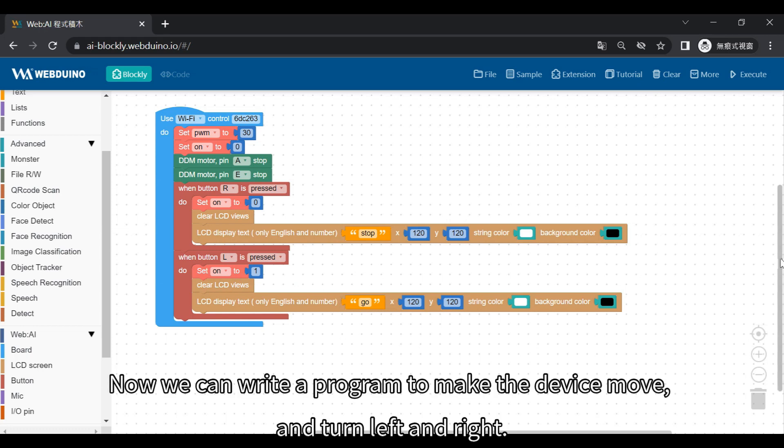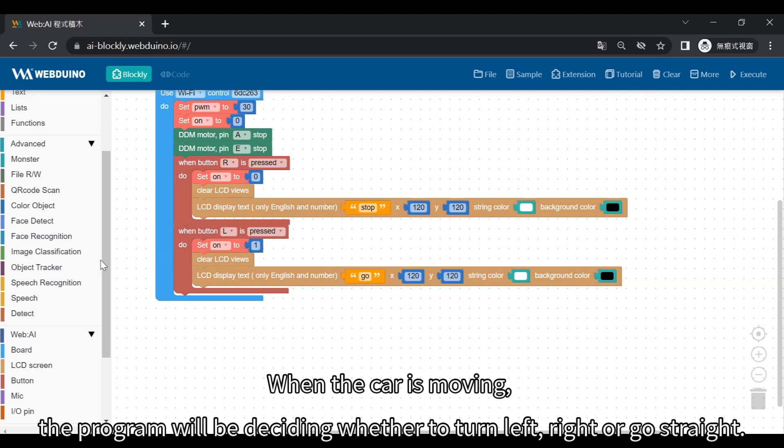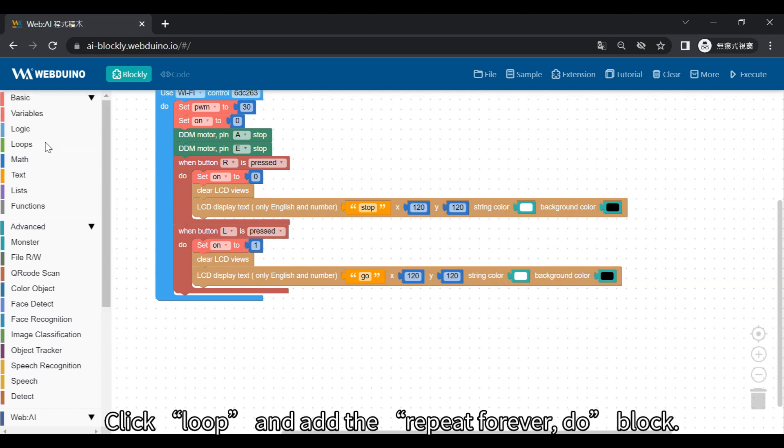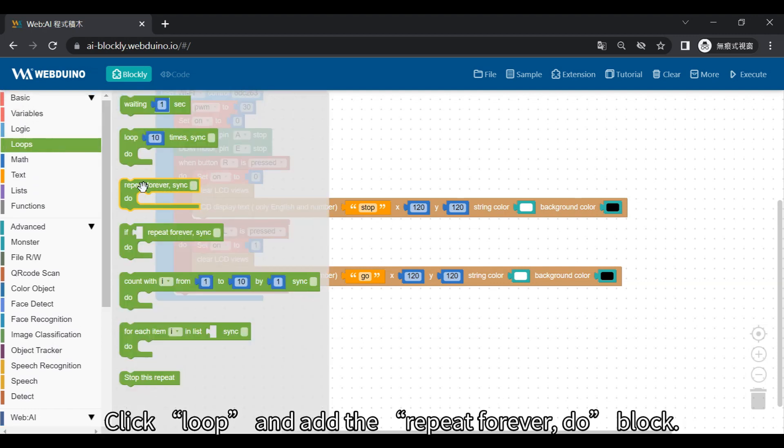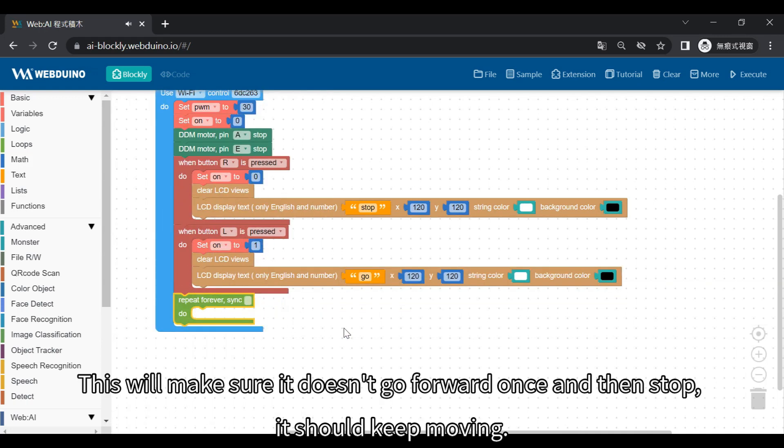Now we can write a program to make the device move and turn left and right. When the car is moving, the program will be deciding whether to turn left, right or go straight. Click loop and add the repeat forever do block. This will make sure it doesn't go forward once and then stop, it should keep moving.